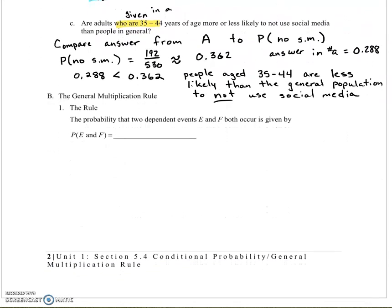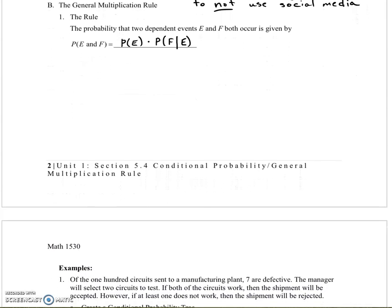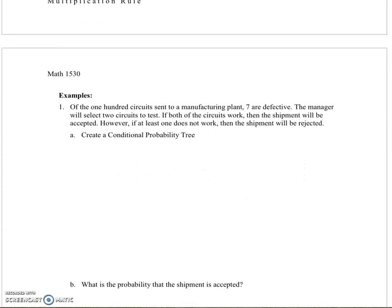Now let's talk about the general multiplication rule. The probability that two dependent events, E and F, both occur is given by the following formula: the probability that E occurred times the probability that F occurs given that E has already occurred. Let's scroll down and see some examples because it makes more sense that way.